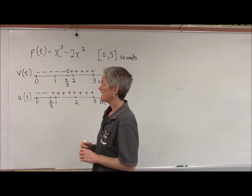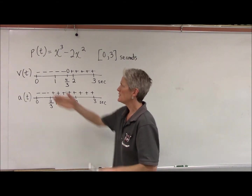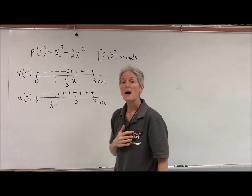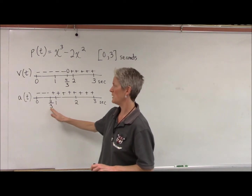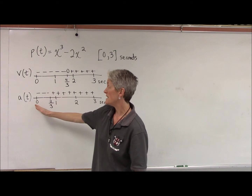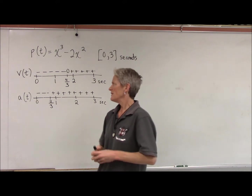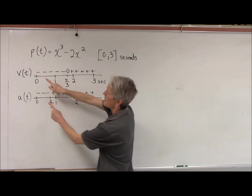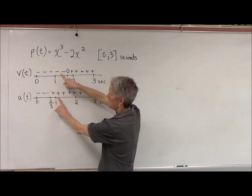Remember, when velocity is negative, that means the particle is moving to the left; when it's positive, it's moving to the right. Then we took the derivative of the velocity and got acceleration. We found a possible inflection point at 2 thirds, and it actually was an inflection point because the acceleration was negative up until 2 thirds and then positive. We then discussed when this particle is going to be speeding up and when it's going to be slowing down. When the velocity and the acceleration agree, we're speeding up; when they disagree, we're slowing down.